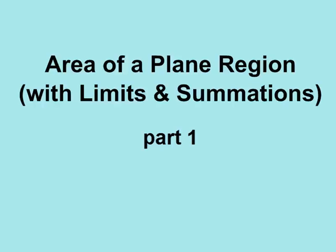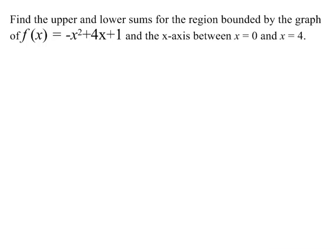Hello, this is Mr. White, and this video is all about using summations and ultimately limits to compute the area of a plane region. For this example, find the upper and lower sums for the region bounded by the graph of f of x equals negative x squared plus 4x plus 1, and the x-axis between x equals 0 and x equals 4.